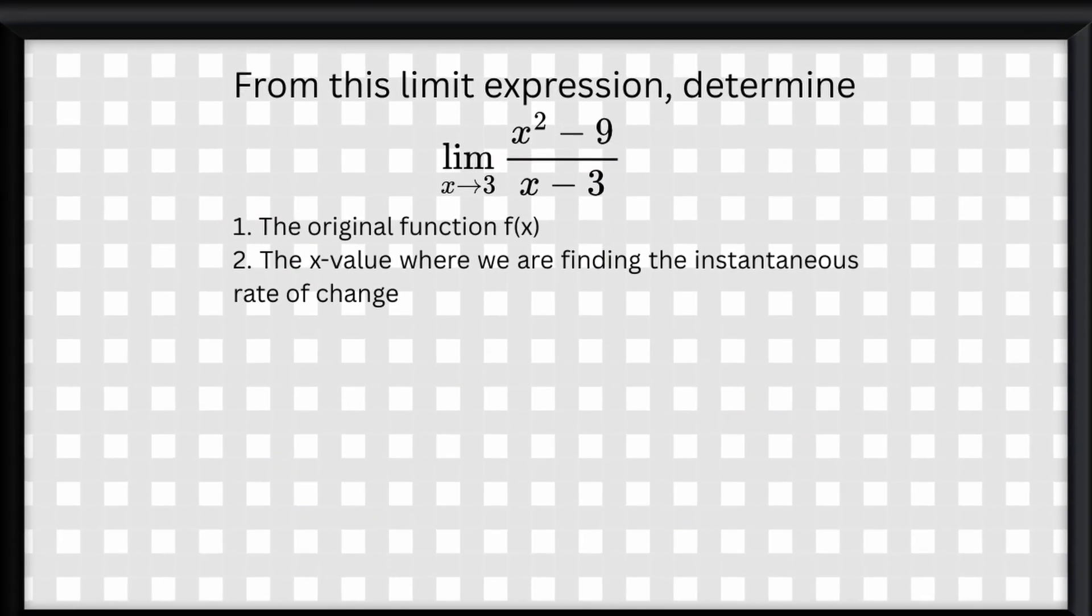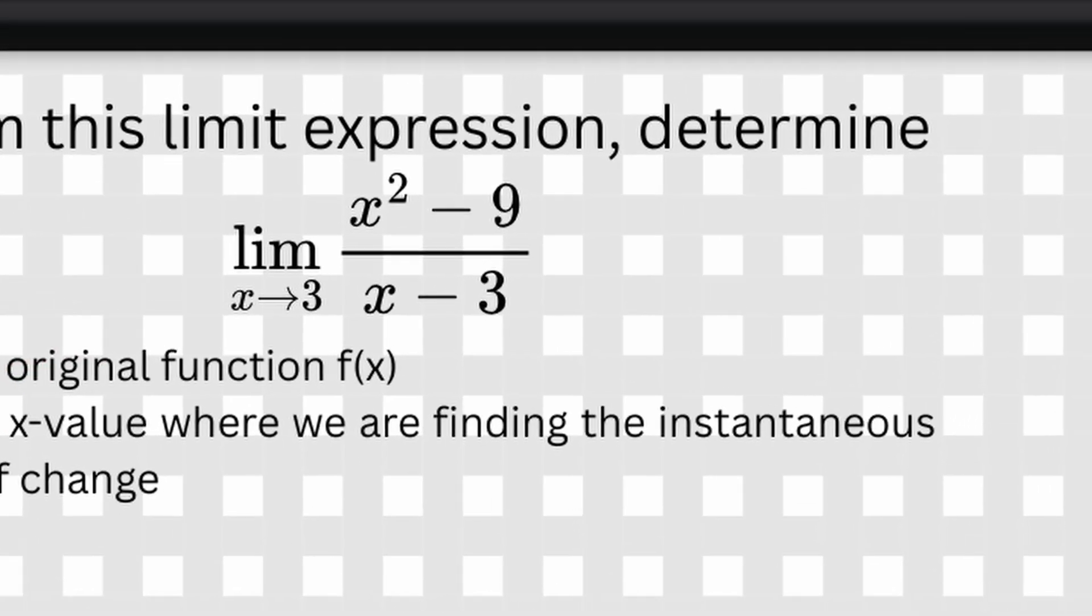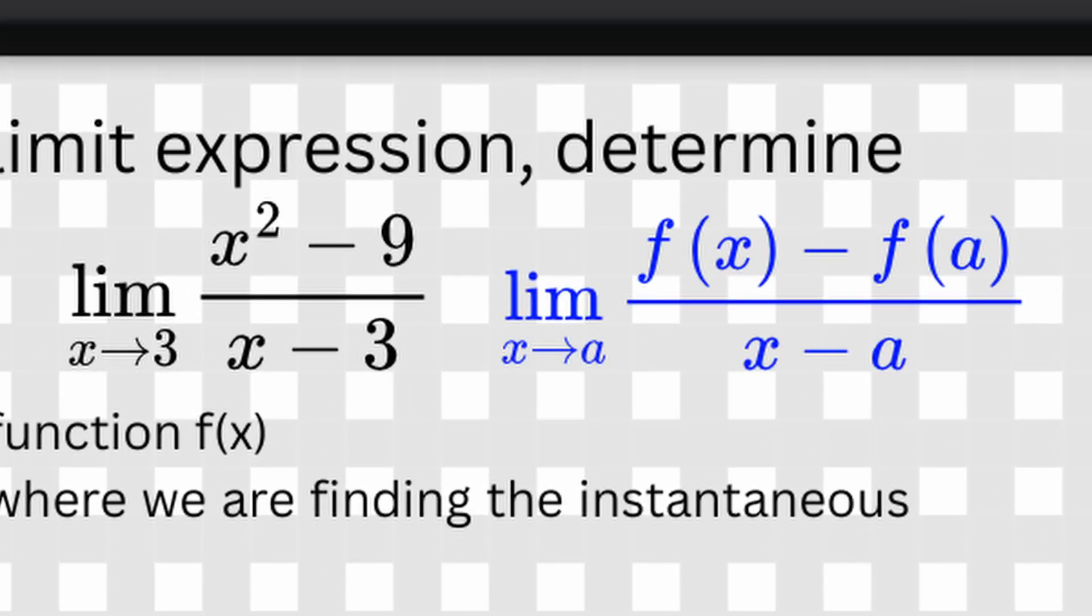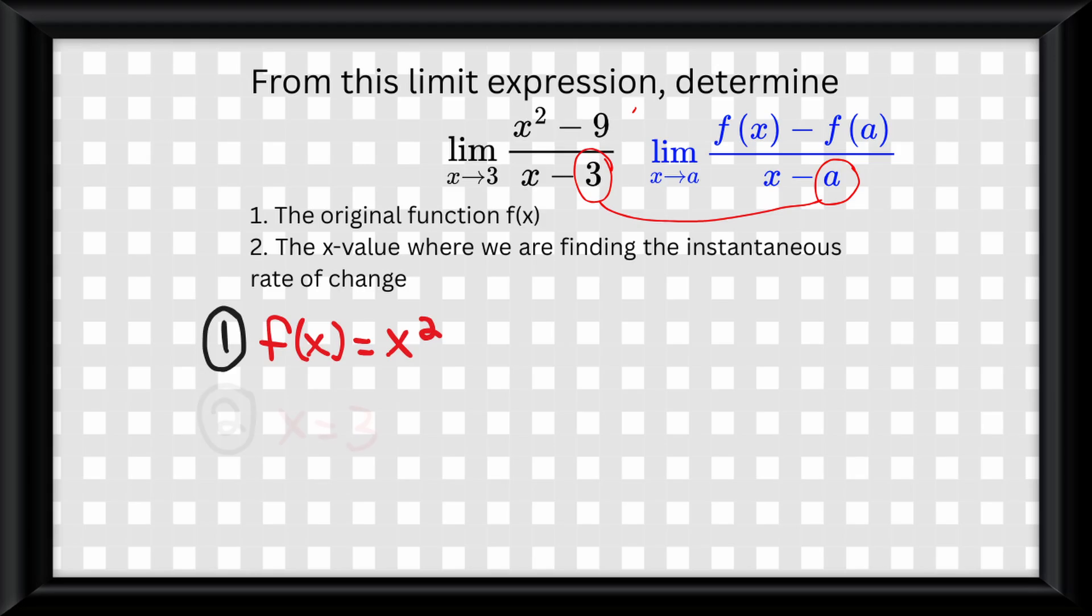To show you an example, let me show you a question you could get on the AP exam. This question has you just given the limit formula already filled out, and it asks you to find the original function and what x values you are finding the instantaneous rate of change at. All you have to do here is take the skeleton formula and decipher each part of the function from that, and take whatever the a value is as the x.